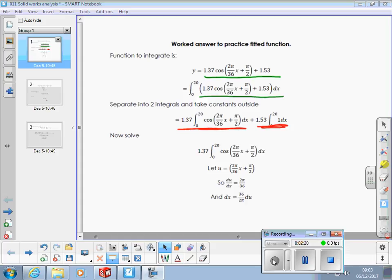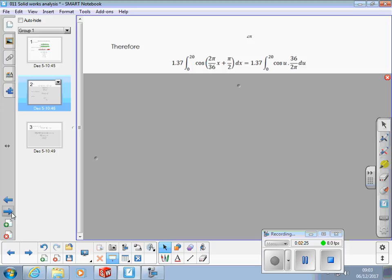Right, next bit is on the next page. So, therefore, we can write that the integral we're looking to integrate in terms of u, so we'll make it cos u, and then we apply dx, or we substitute for dx, 36 over 2 pi times du. Are you both happy? See what I've done there?